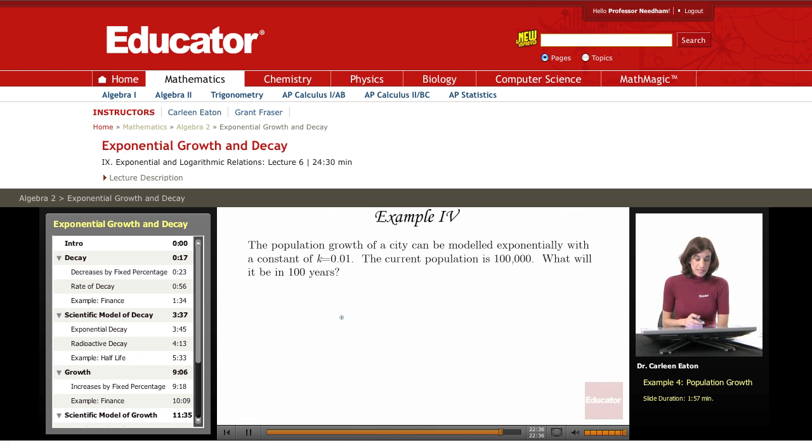Example 4. The population growth of a city can be modeled exponentially with a constant of k equals 0.01. The current population is 100,000. So what will it be in 100 years?